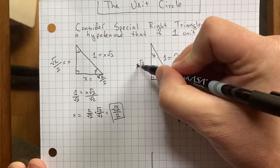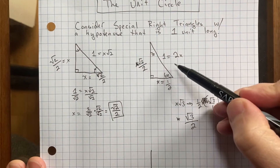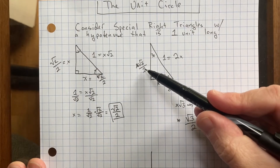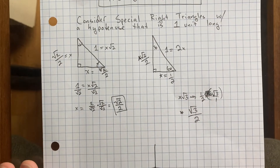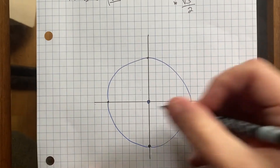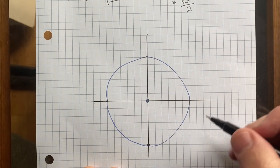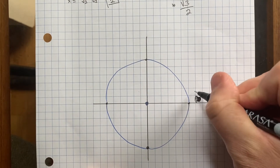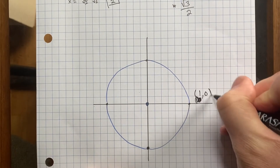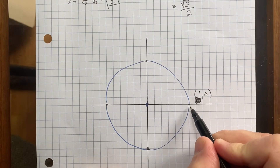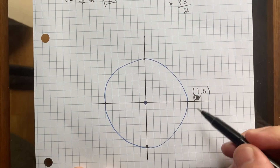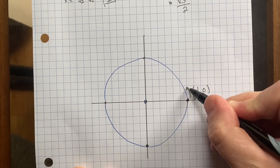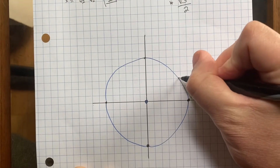Divide by the square root of 2, so x equals 1 divided by the square root of 2. I do not like irrational numbers in the denominator of any fraction, so let's rationalize the denominator by multiplying by root 2 over root 2. What you end up with is the square root of 2 divided by 2, since root 2 times root 2 is 2. So both of these sides are the square root of 2 over 2 when the hypotenuse is 1.